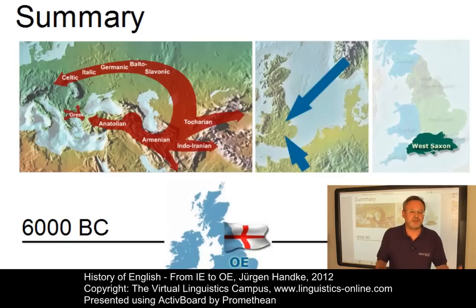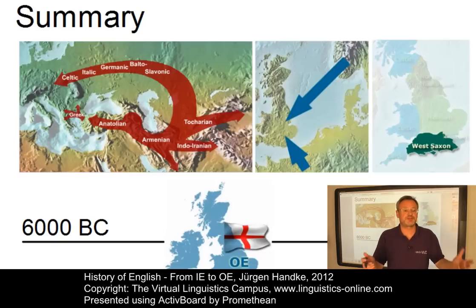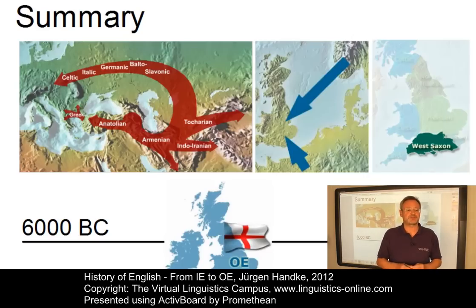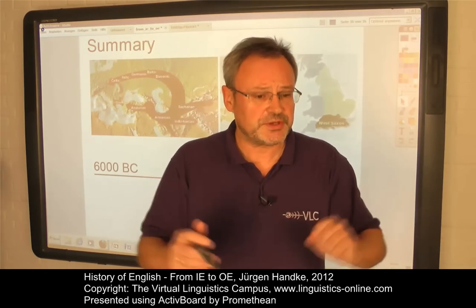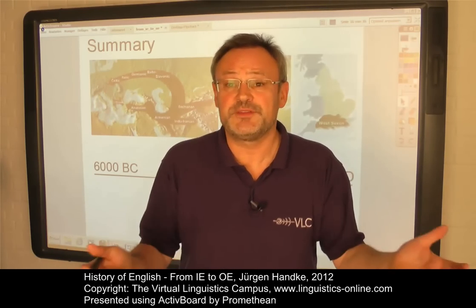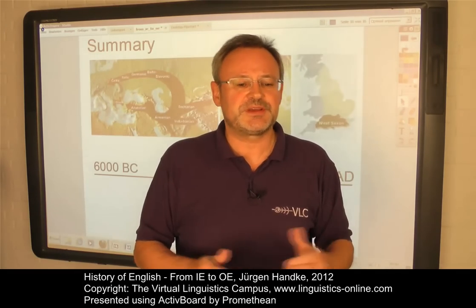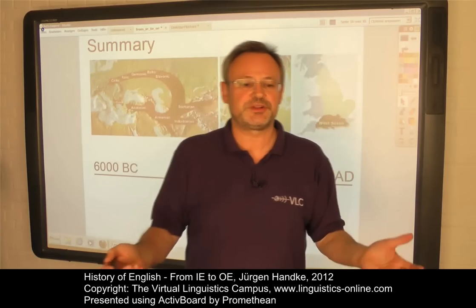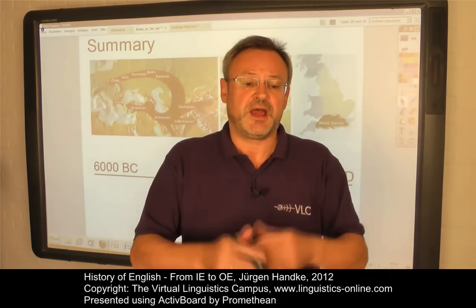Now we know the main parts of the early story of English. Its ancestor languages are Indo-European and Germanic. It belongs to the Anglo-Frisian branch of West Germanic and is referred to as Old English in its earliest form, used between 600 and 1100 after Christ. The properties of Old English cannot be told in one e-lecture, so I invite you to join me again in further e-lectures about the linguistics of Old English, from phonology to syntax, and further details about the history of that time.